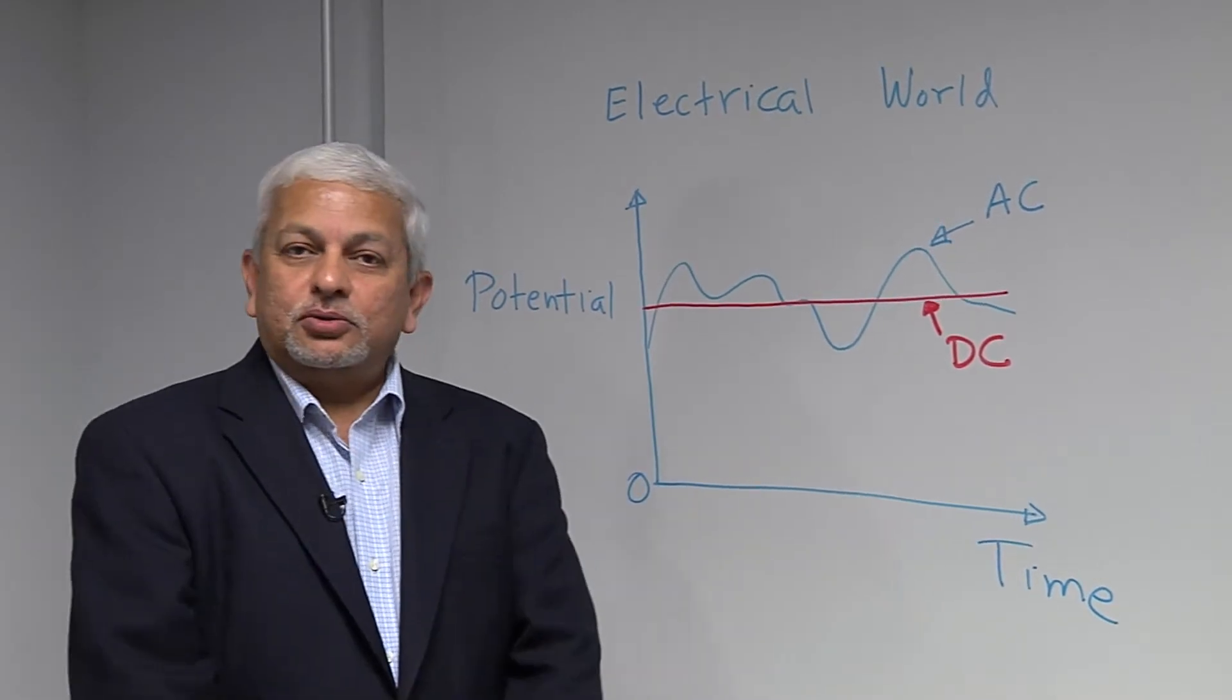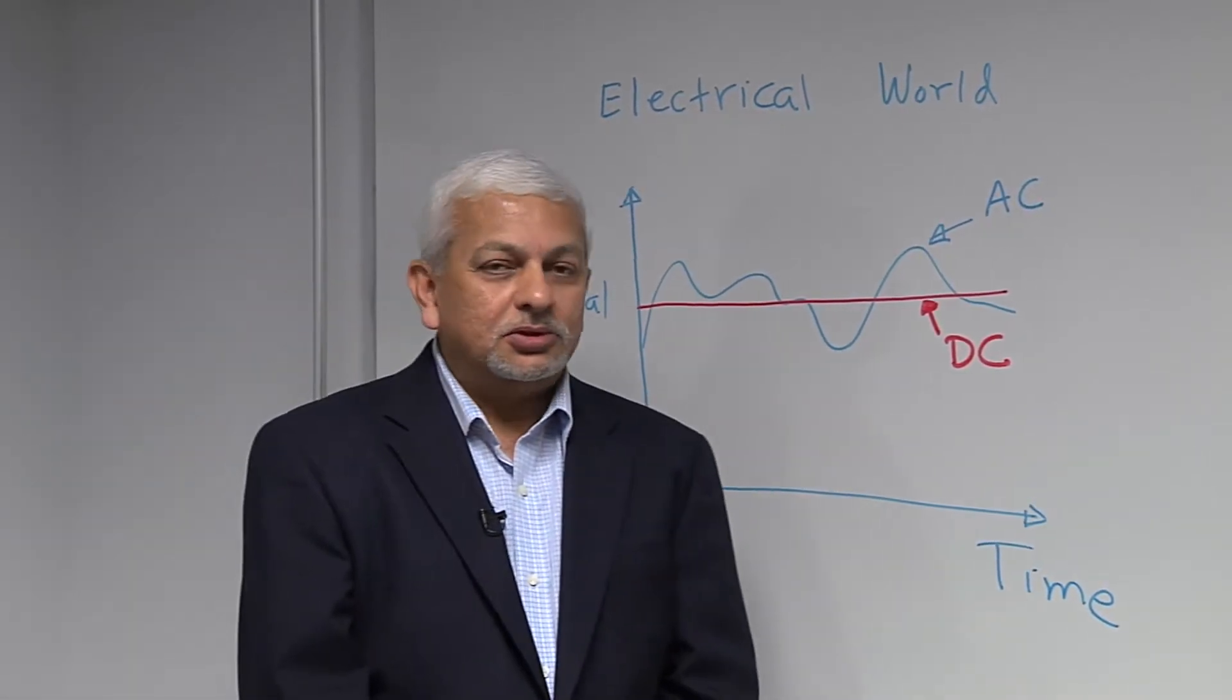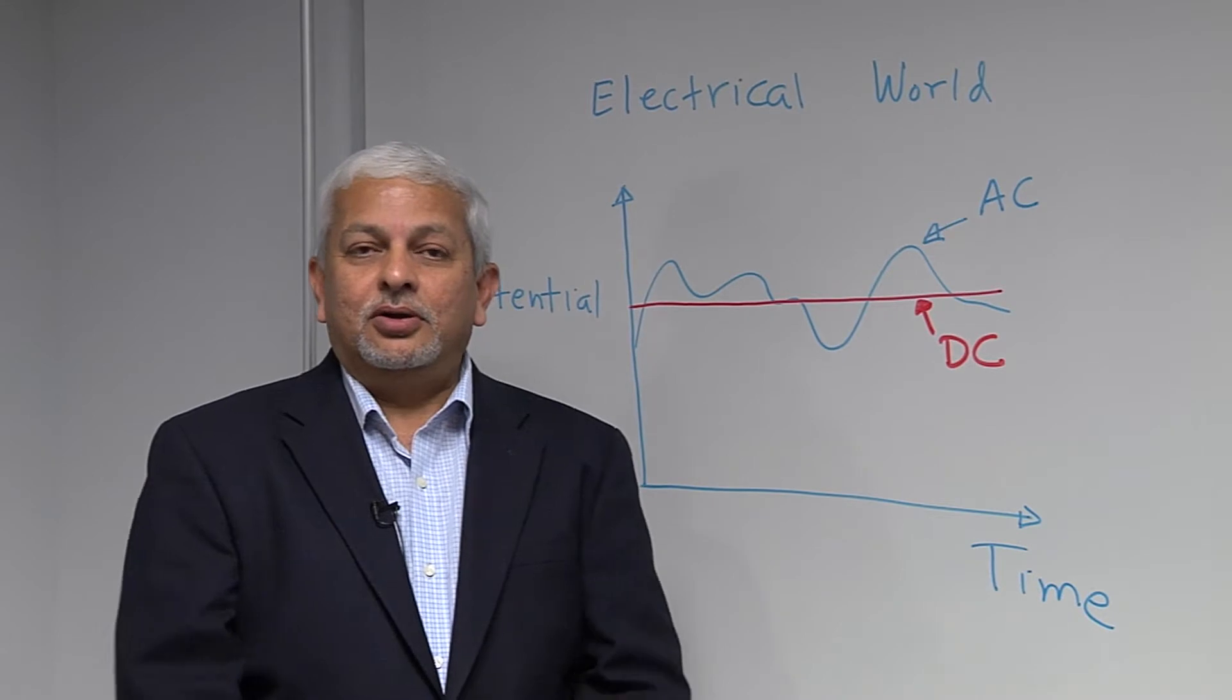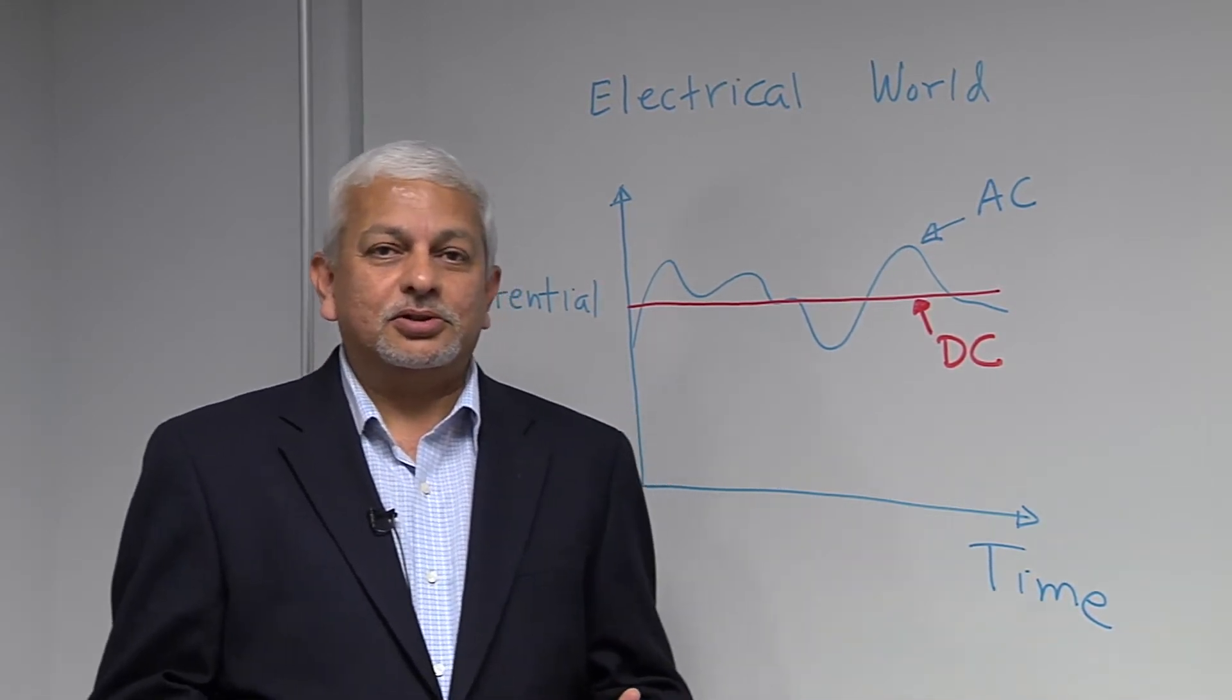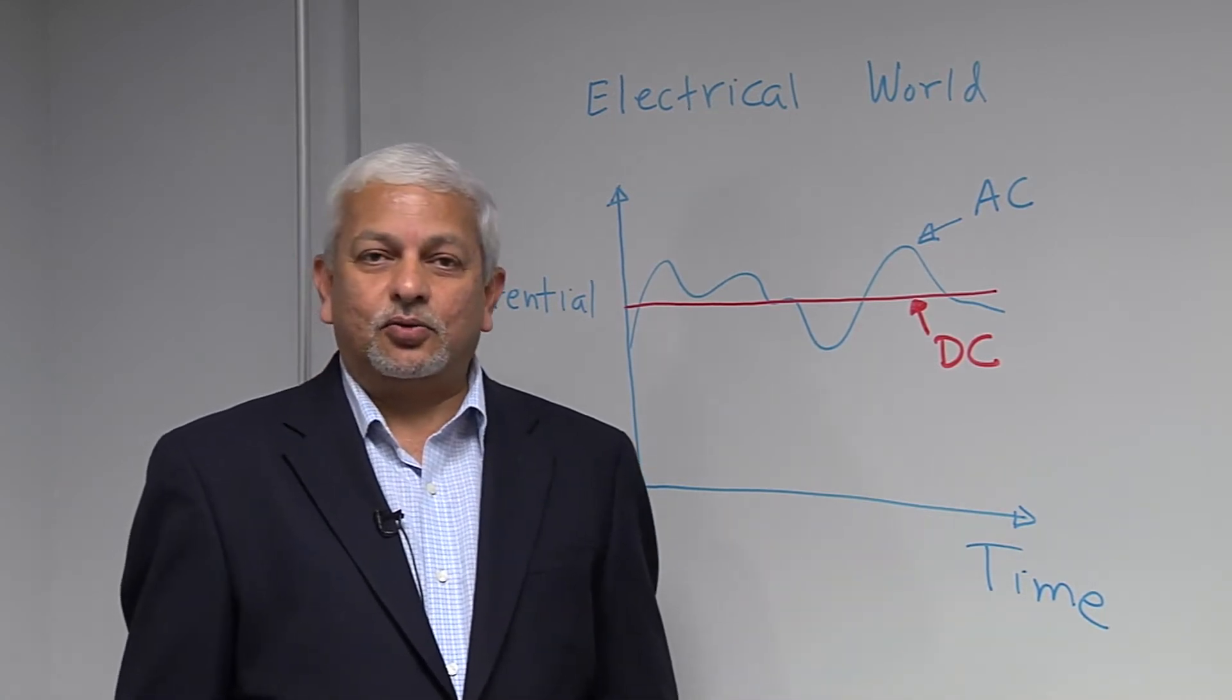Today, I want to talk to you about the relationship between what is called alternating current and direct current, usually called AC and DC in the electrical world.